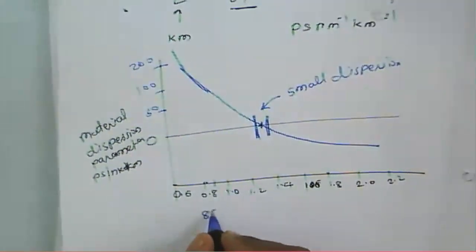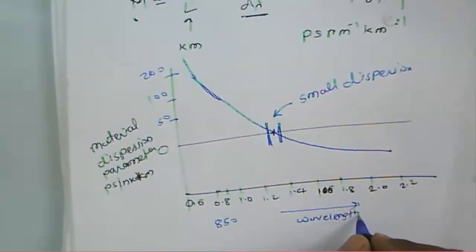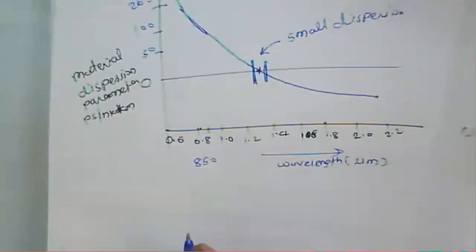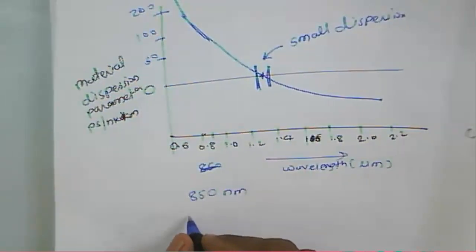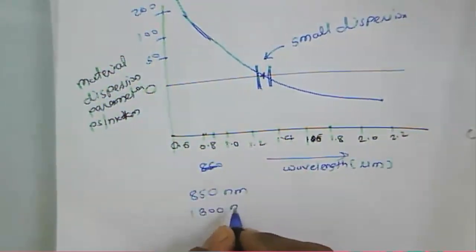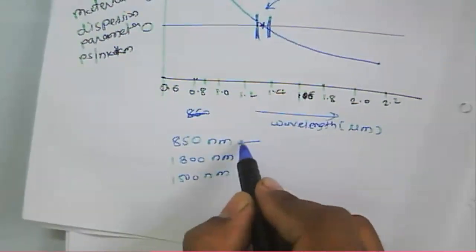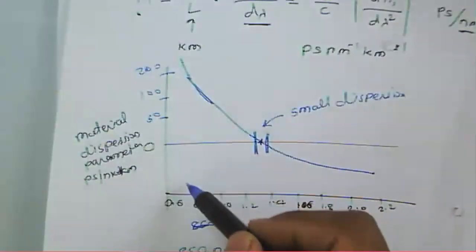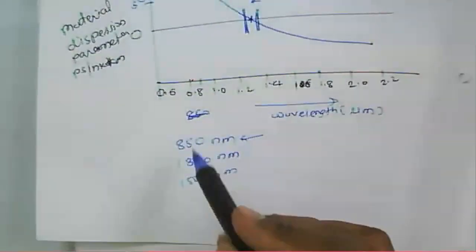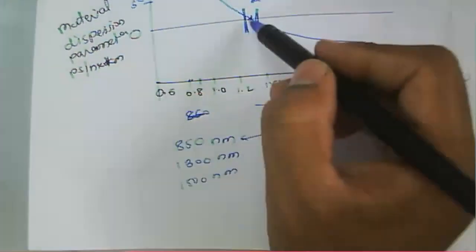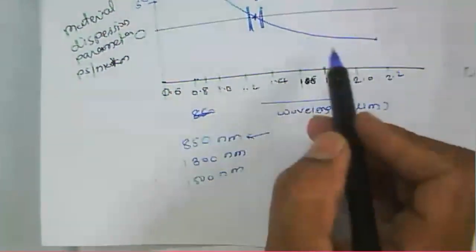The wavelength is expressed in micrometers. Generally, sources operate at 850 nanometers, 1300 nanometers, or 1500 nanometers. At 850 nanometers there is large dispersion. At 1300 nanometers the dispersion is small.